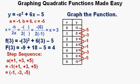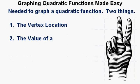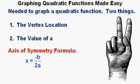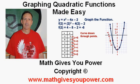We use this step sequence to get all other output values. Here are all the points plotted along with the axis of symmetry, and here's the curve drawn through these points. Remember, it's really easy to graph quadratic functions if you know just two things: the location of the vertex and the value of a. You need to know the formula for the axis of symmetry, x equals negative b over 2a, and the step sequence of a times plus 1, plus 3, and plus 5. This has been graphing quadratic functions made easy. Thanks for viewing.